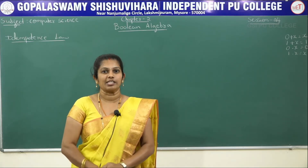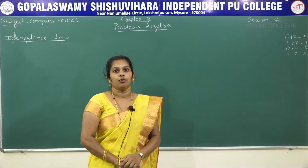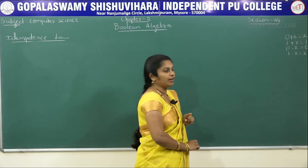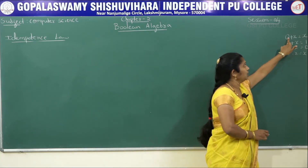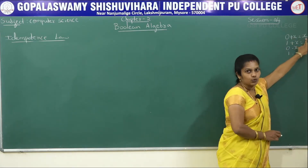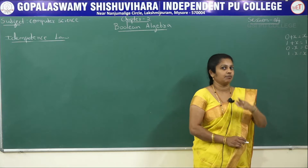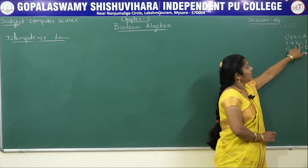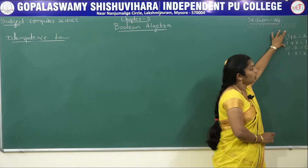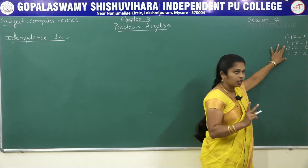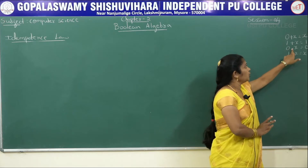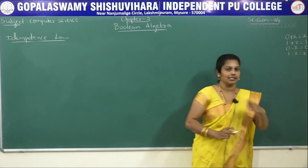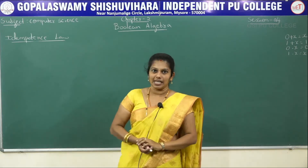In the previous class, we explained a few concepts on Boolean algebra — the law of addition and the law of multiplication. In the law of addition: 0 plus x equals x, and 1 plus x equals 1. In the law of multiplication: 0 into x equals 0, and 1 into x equals x. These are the postulates we explained in the previous class.